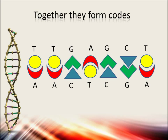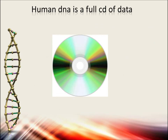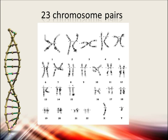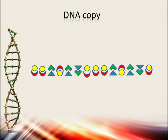Together they form base pairs. Those base pairs form strings of codes — lots of codes. In fact, human DNA holds as much data as a full CD, but wrapped up in a tiny cell so small you can't even see it. The strings are wrapped up in small spirals, and those spirals form chromosomes. A human being has 23 chromosome pairs, while a chimpanzee has 24. The extra pair is because human chromosome 2 consists of two smaller chromosomes in the chimpanzee.